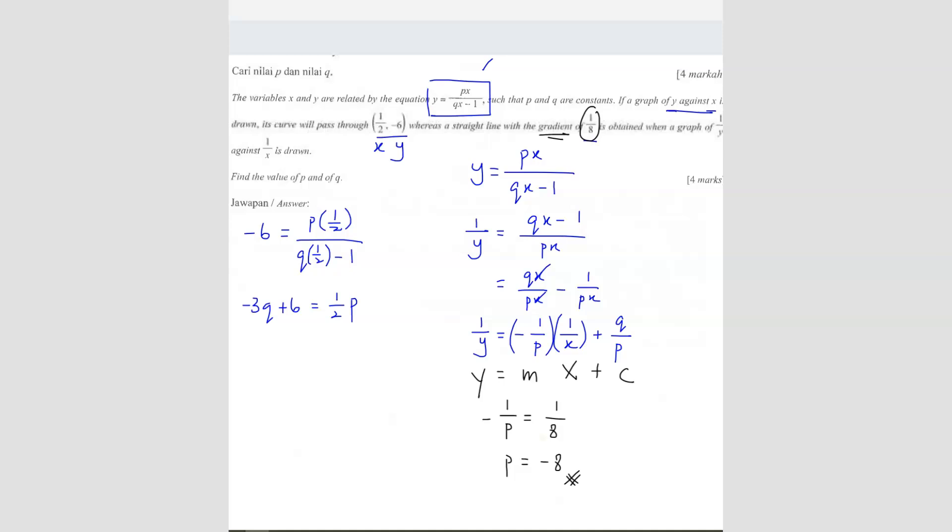So we have already gotten our p value. So now we can find our q value, just substitute. So when I substitute here, I will get negative 3q plus 6 equals to 1 over 2 times negative 8. So I get negative 3q equals to negative 4 plus 6 because I bring the 6 to the other side. Sorry, it should be negative 6, not plus 6. So q is equals to negative 10 over 3. Sorry, positive because I'm going to bring two negatives over. So it's going to be 10 over 3.